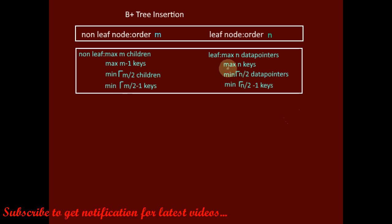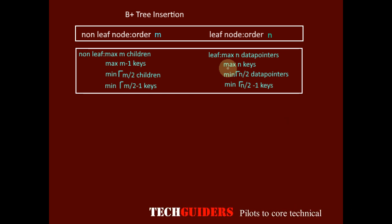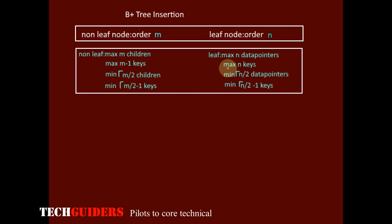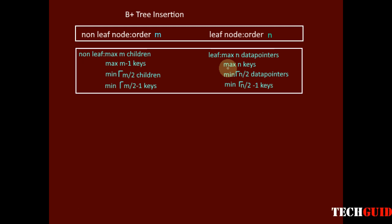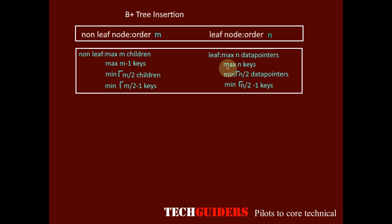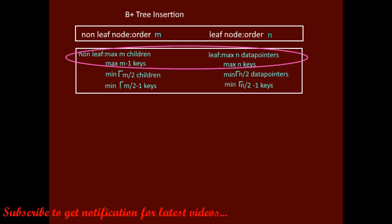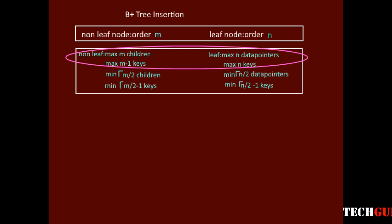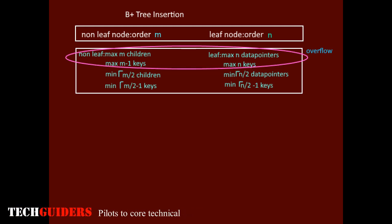Whenever new database records are inserted into the database file, new index records will be added to the B+ tree index. This means new elements are being inserted into the B+ tree. The insertion of these new entries may lead to a disturbance of the maximum occupancy condition at some nodes, and then an overflow is said to have occurred. So while inserting new elements into the B+ tree, this overflow condition must be handled.